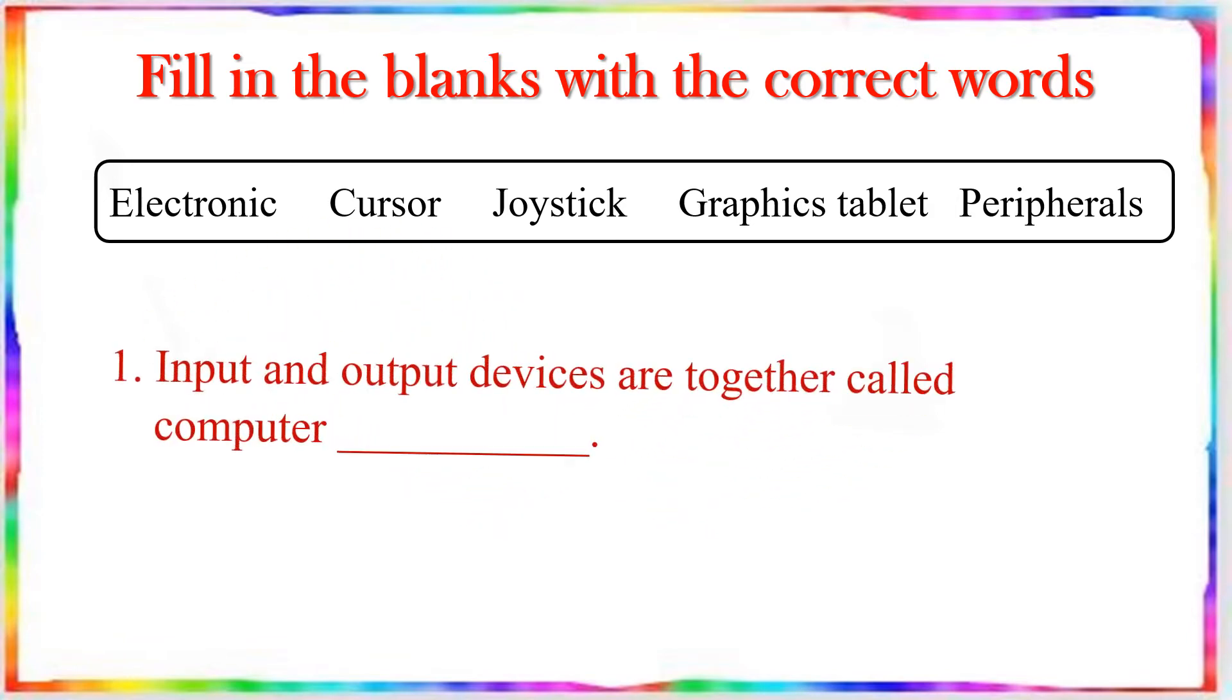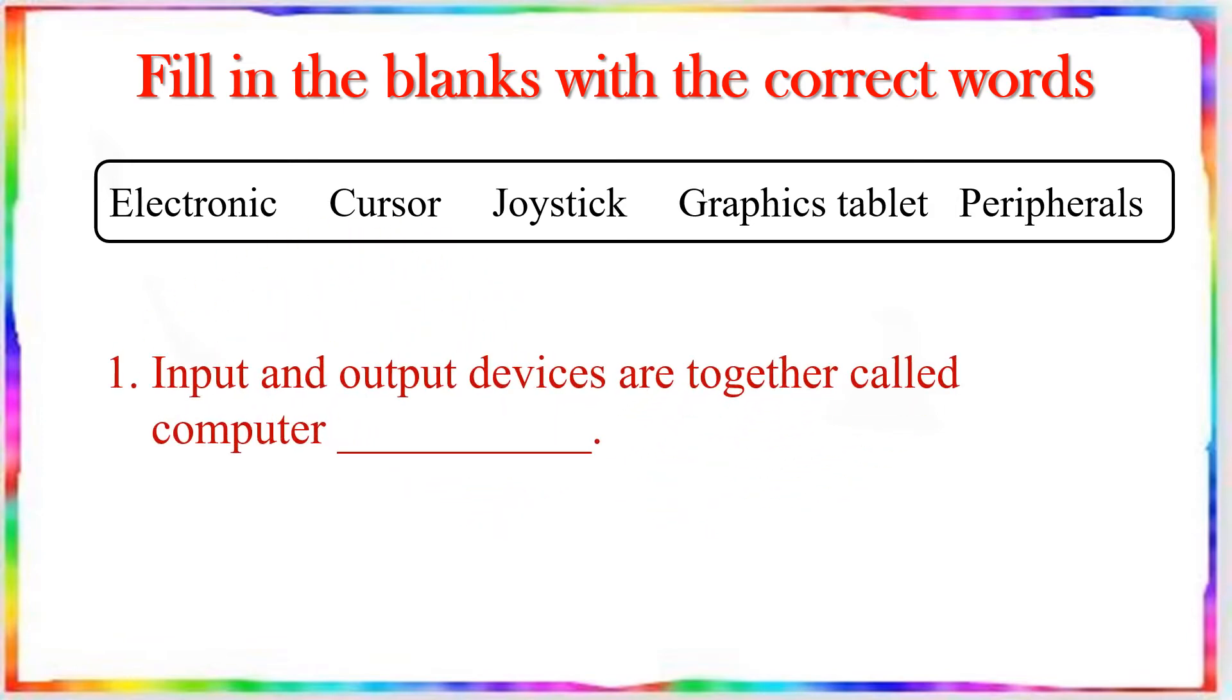Question number 1: Input and output devices are together called computer dash. We are going to see input and output devices are together. What are we going to say about the answer? Answer is peripherals.